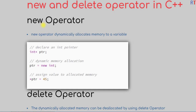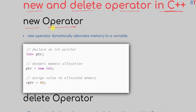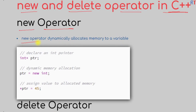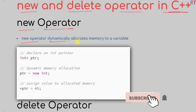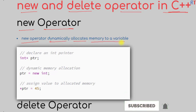In this video we're going to talk about the new and delete operators in C++ programming. First, we're going to talk about the new operator. The new operator is used to dynamically allocate memory to a variable.